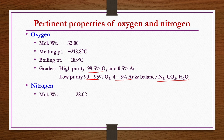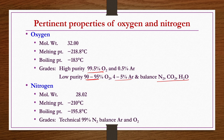For nitrogen: molecular weight is 28.02, melting point is minus 210 degrees centigrade, boiling point is minus 195.8 degrees centigrade. Technically 99 percent pure N2 is available, with the balance being Ar, O2, or both present in the remaining 1 percent.